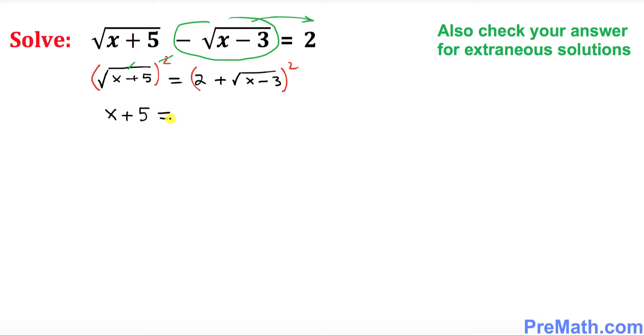And over here we will be using a plus b squared formula. So that's going to give you simply 4. This is simply become 4 plus 2 times 2 and then square root of x minus 3 and plus square root of x minus 3 and then square. So far so good.